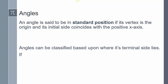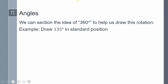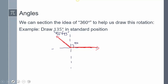I can draw a 135-degree angle in standard position. I need to think about how to break this up. Since I know everything is in quadrants and one quadrant is 90 degrees, I can break 135 into 90 plus 45 degrees. So I start at the initial side, travel 90 degrees, then 45 more. This red line here is my 135-degree rotation — so that's 135 degrees.